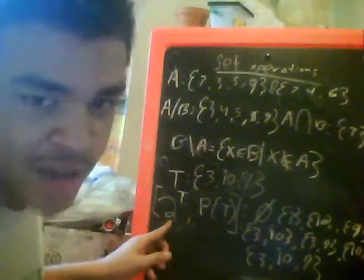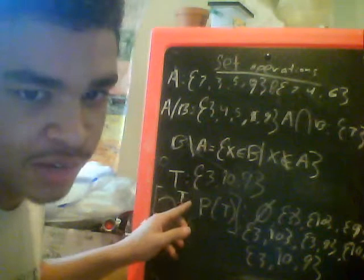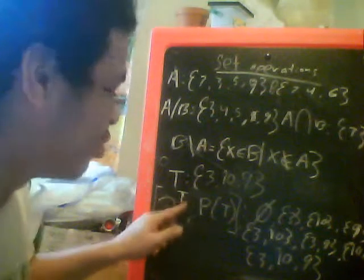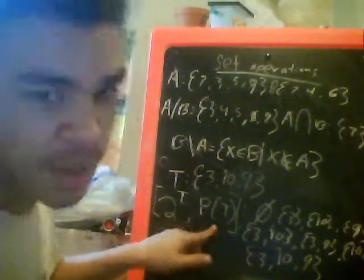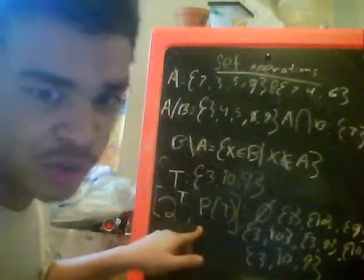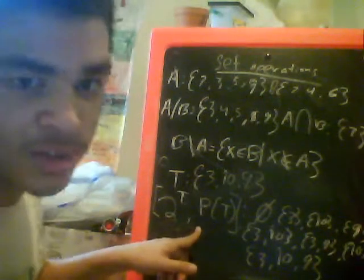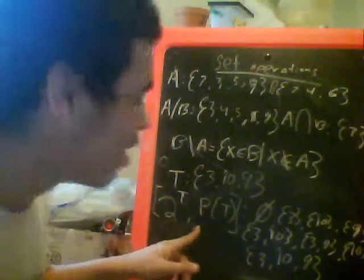So it can be written as 2 to the set letter, like this is set T, so it's 2 to the T, and it can also be written as P parentheses. Now, there are other ways to write it, but I think these two are used more commonly. I mean, that's all I've seen.